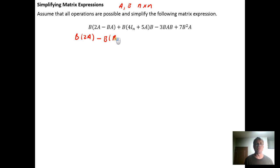So we get B times BA plus distribute this B into the parentheses. We're going to get B times 4I_n where I_n is the n by n square identity matrix, plus B times 5A.